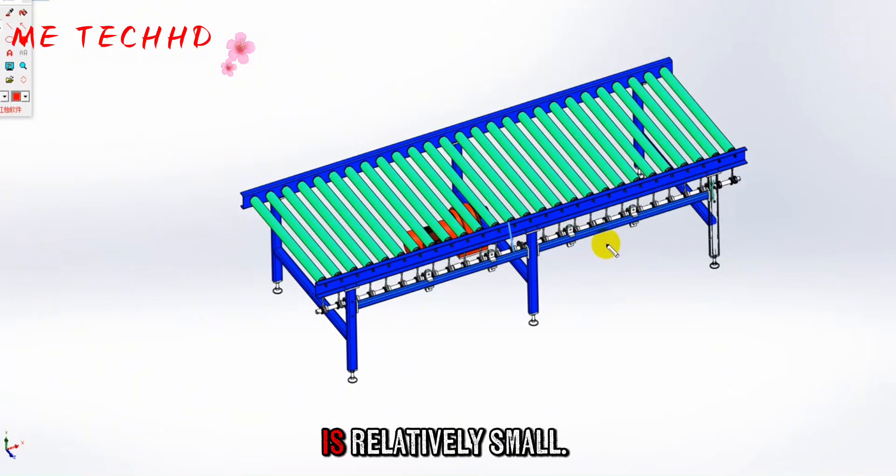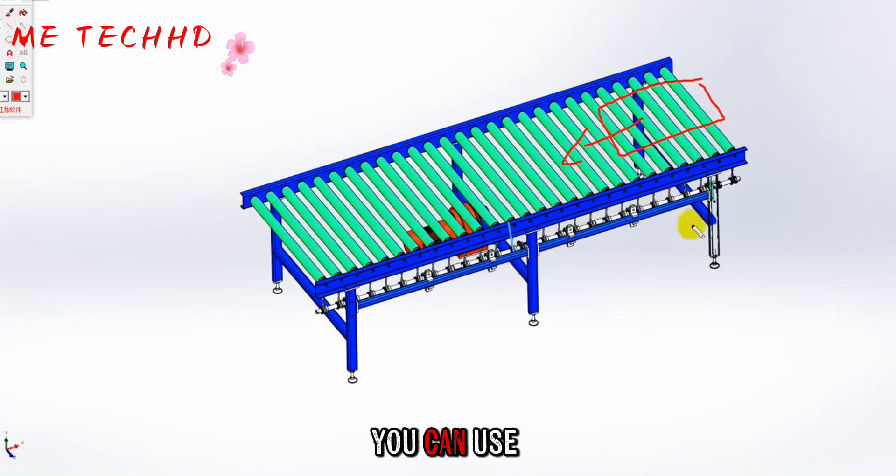Generally, the load is relatively small. For example, we deliver glass. Then you can use an O-belt.